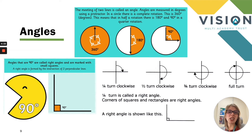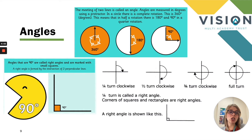A right angle is where two perpendicular lines meet — perpendicular means two lines that meet at a right angle. We can show that when doing turns — the quarter, a half, three quarters — we can show the different intervals of 90 degrees on each.